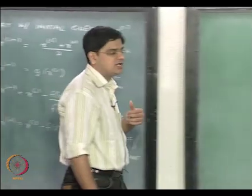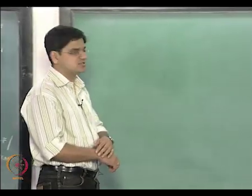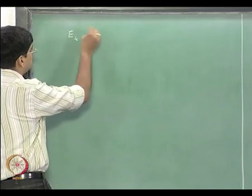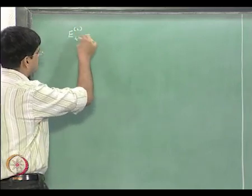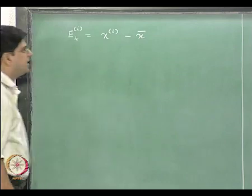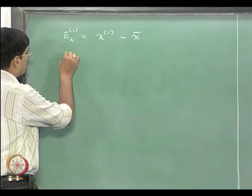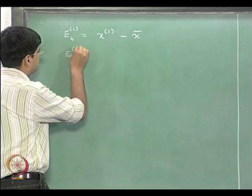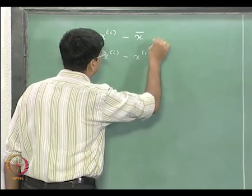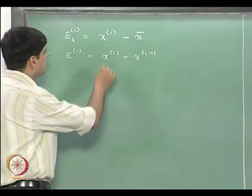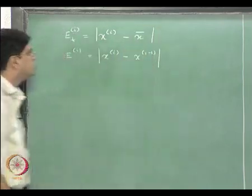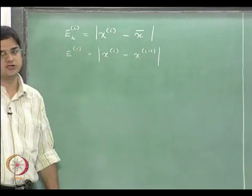Let us go back and think about the definition of errors. The true error at the i-th iteration is defined as e_t = x_i minus x_bar, where x_bar is the true solution. The approximation error e is equal to x_i minus x_(i-1). We look at the absolute values of these errors, since we do not bias ourselves on whether the error is positive or negative.